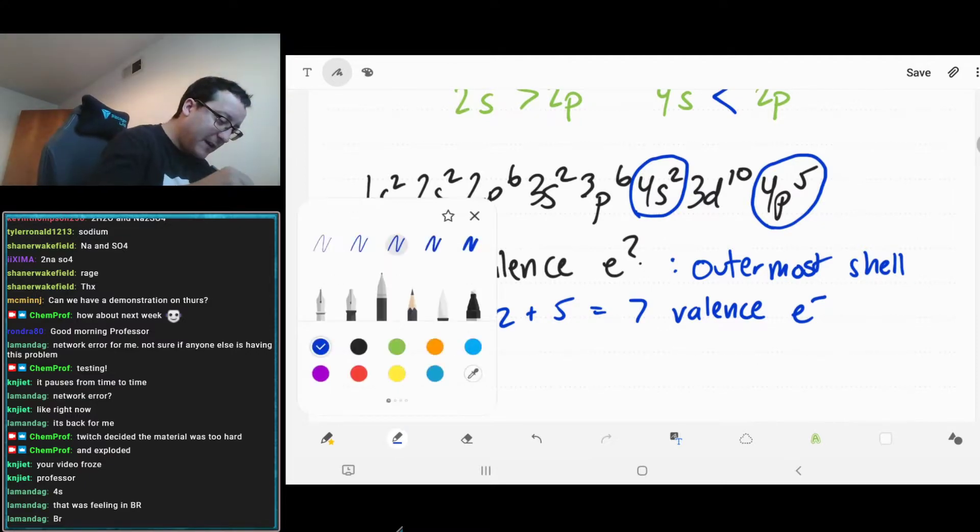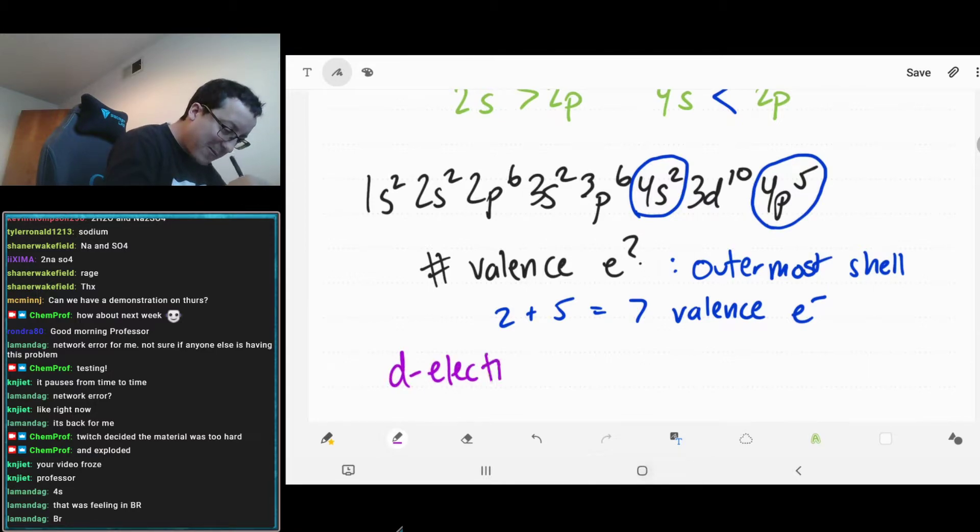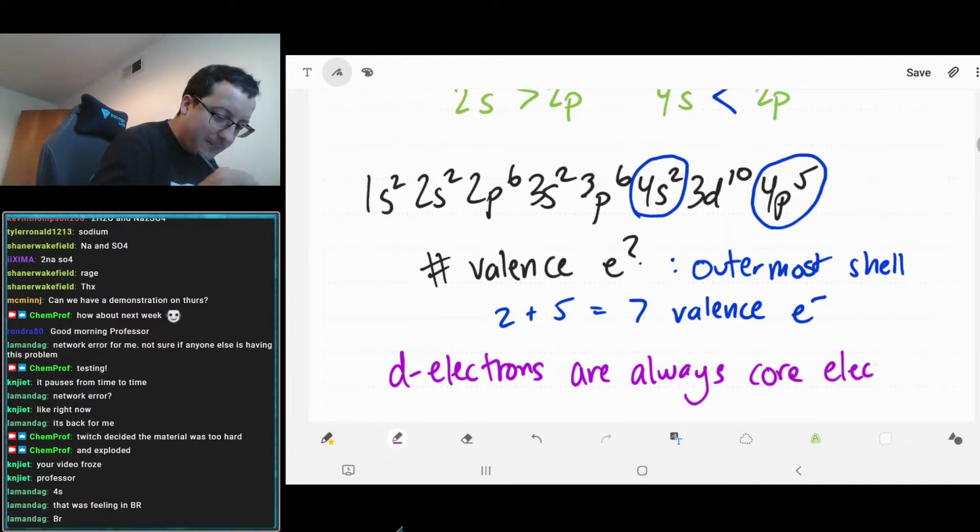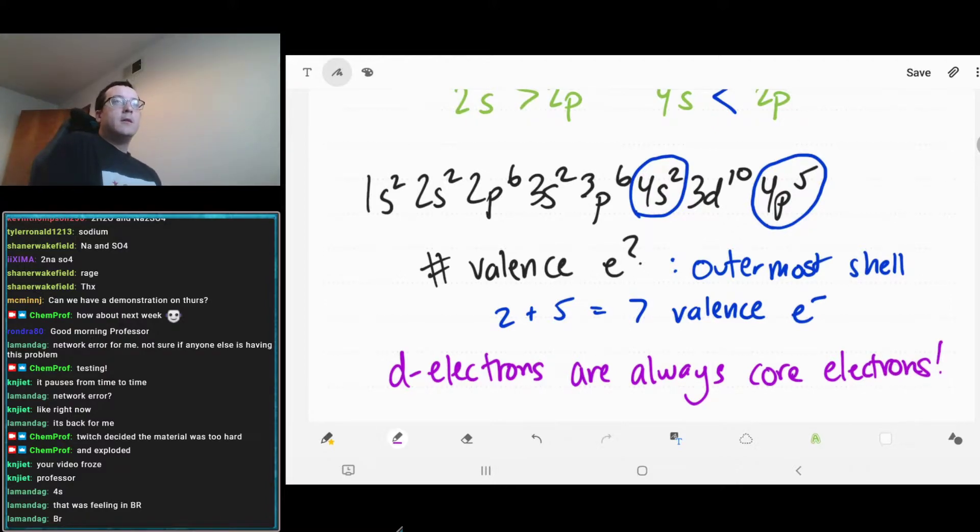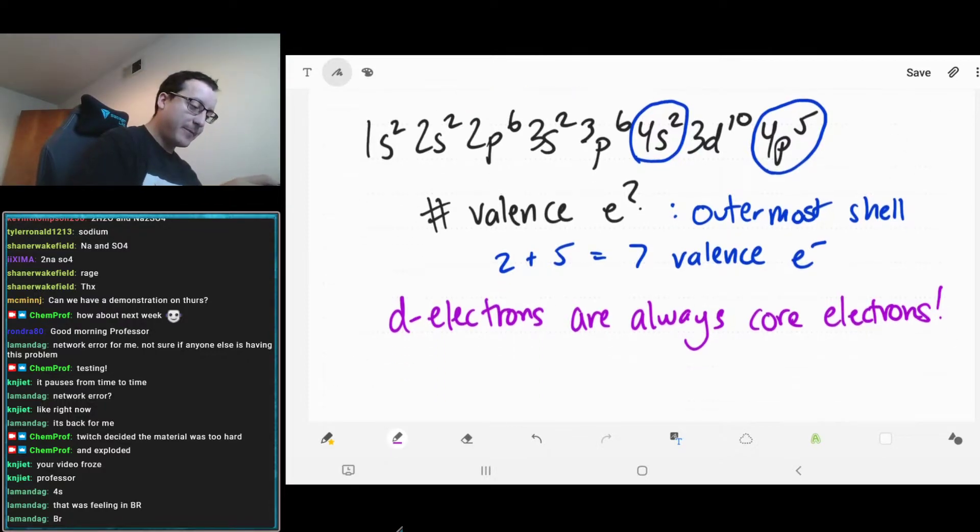And so for us, in this case for bromine, the outermost shell will be the ones with 4s in front of them. And so if we look, we have two electrons in the 4s, or five in the 4p, which is seven valence electrons. So what we have seen here is that d electrons are always core electrons.